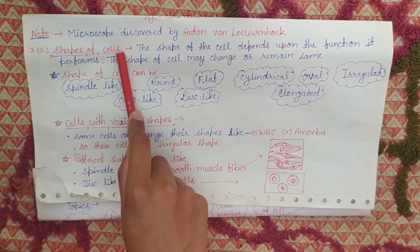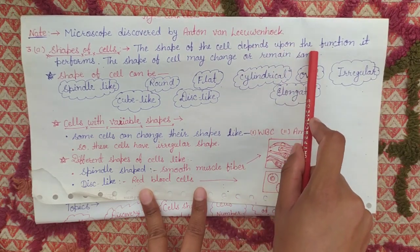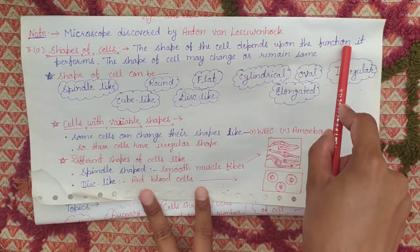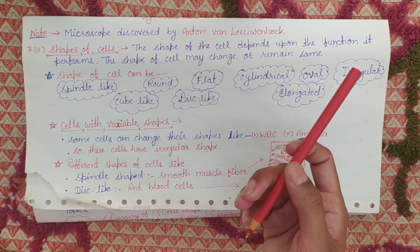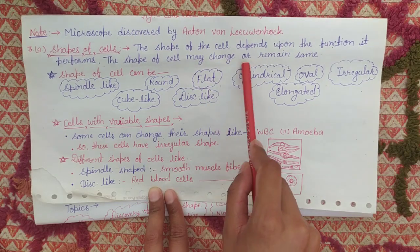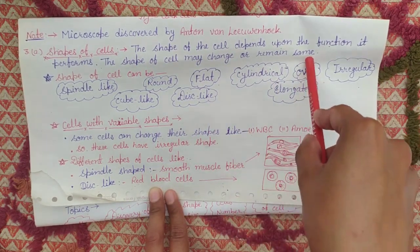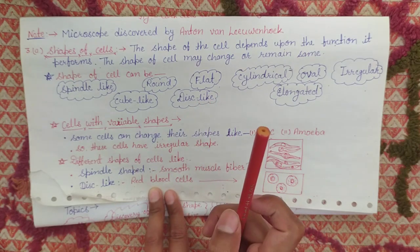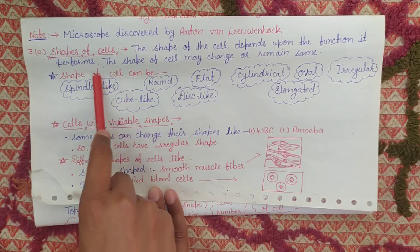Shapes of cells — that is your third topic. The shape of the cell depends upon the function it performs. The shape of the cell may change or remain the same. There is no necessity that every cell changes its shape. Some cells may change because they are irregular cells; they will change their shape. But all cells will not change their shape.